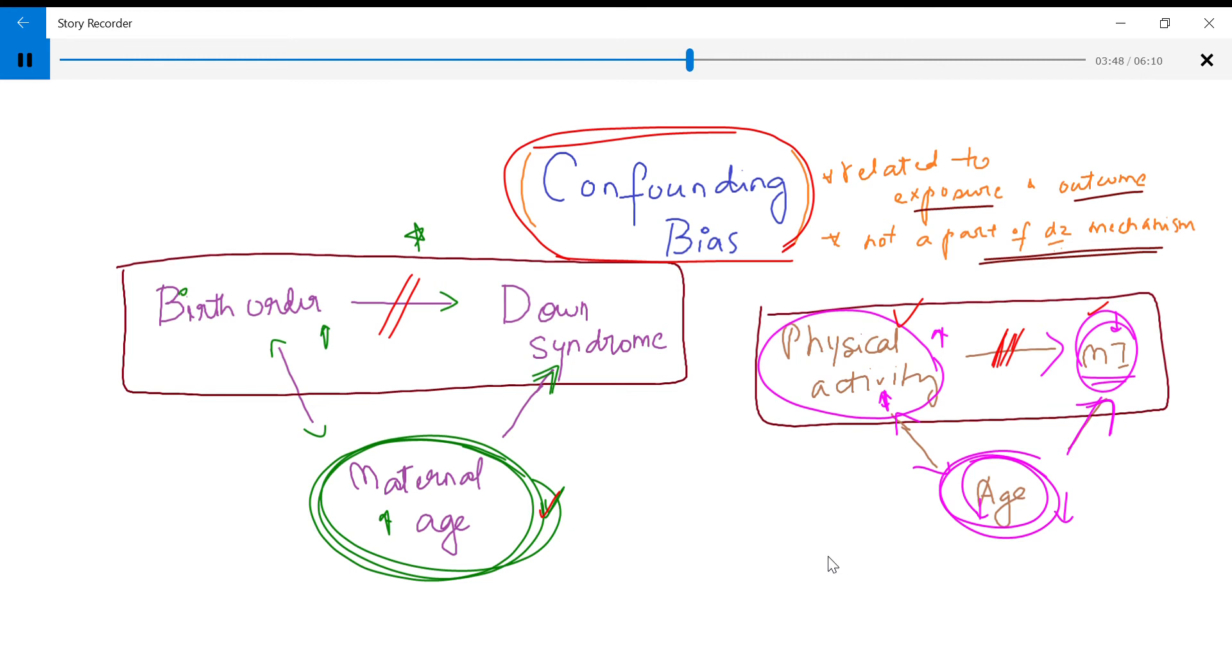Now, we also don't want to confuse it with a mechanism. For example, someone who is having high physical activity also tends to have a lower blood pressure and that decreases their incidence of MI. So this is a mechanism. It's a part of the mechanism. So this won't be, so blood pressure in that case will not be a confounding factor.